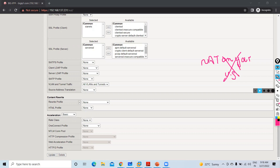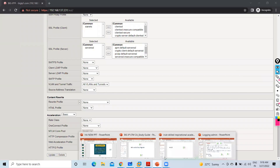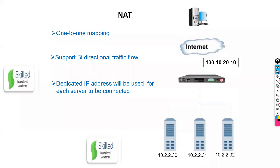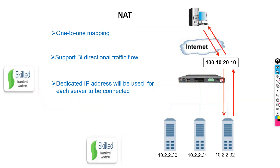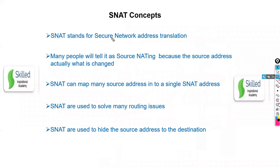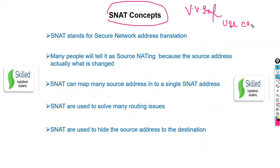Now another important concept comes into picture — SNAT, which is very, very important. NAT is one-to-one mapping and bi-directional. If three servers each need their own NAT, three NATs would need to be configured. SNAT is different. You need to understand the use cases of SNAT — generally people know only one use case, but there are four use cases which we will discuss.